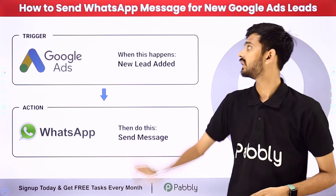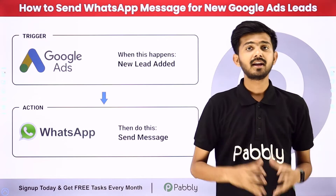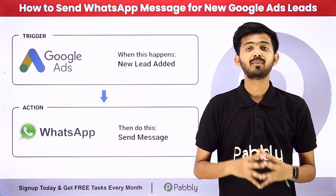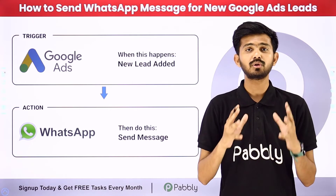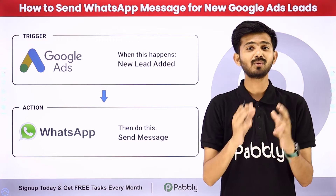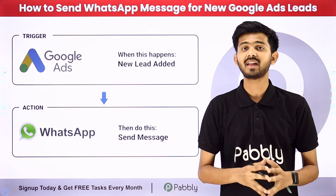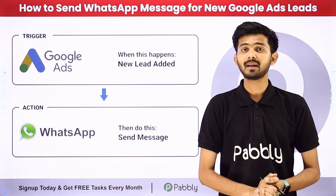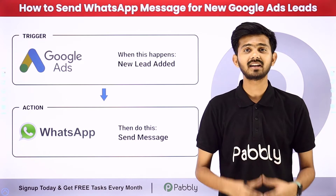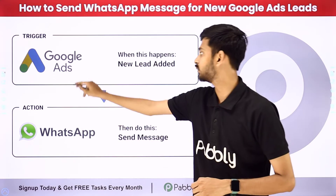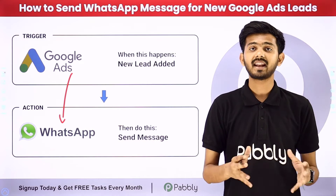Hello everyone. Today our topic is how to send WhatsApp messages for new Google Ads leads. Suppose we are using Google Ads to promote our business and we are receiving a lot of leads. Whenever we receive a new lead from Google Ads, we want to automatically send a WhatsApp message to that particular lead. For sending the message on WhatsApp, we are going to use WhatsApp Cloud API, and we need to build a connection between Google Ads and WhatsApp Cloud API.